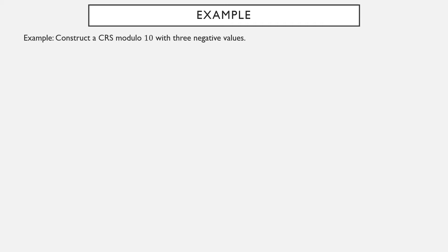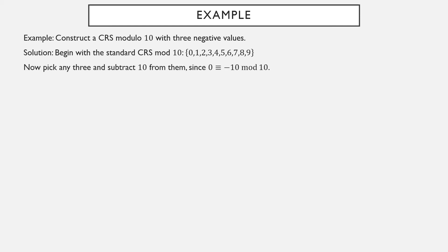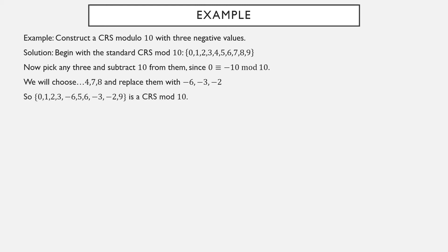Let's look at another example. Construct a complete residue system modulo 10 with exactly 3 negative values. The standard CRS mod 10 is {0, 1, ..., 9}. We can pick any 3 elements and subtract 10 from them. Since we're working modulo 10, subtracting 10 is the same as subtracting 0. For example, pick 4, 7, and 8: subtracting 10 gives -6, -3, and -2. So replacing those gives a complete residue system mod 10 with exactly 3 negative values. There are many other solutions to this problem.